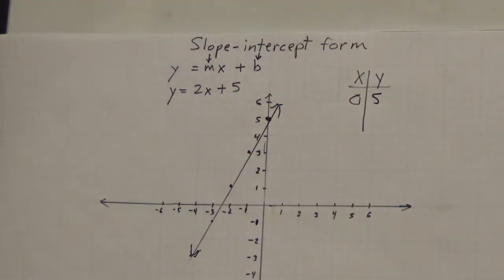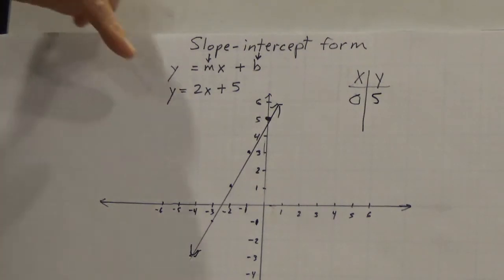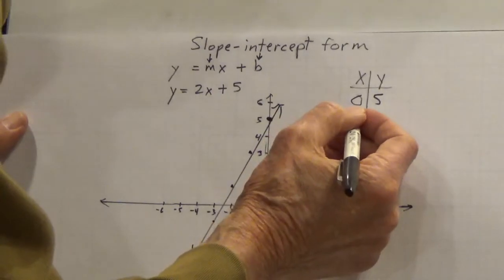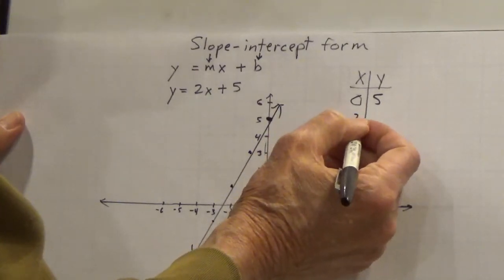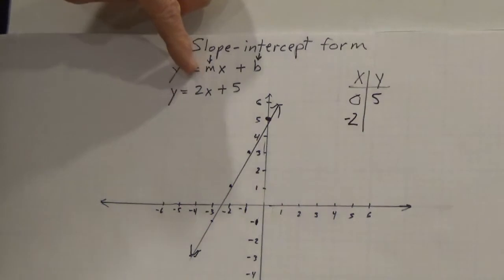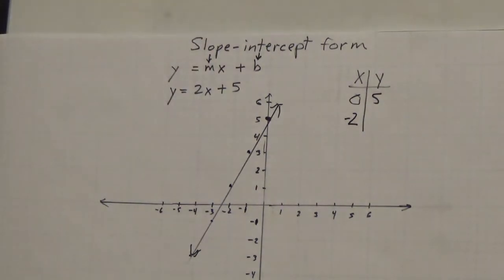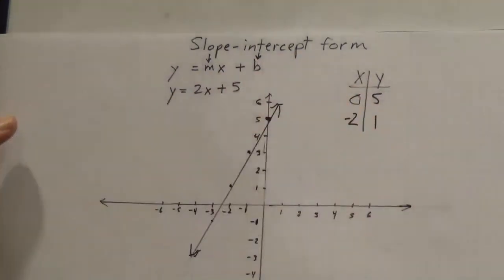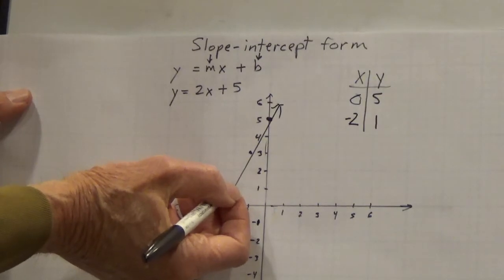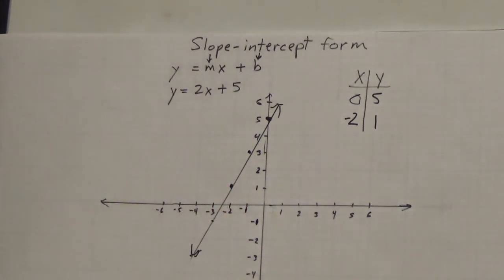Let's give x another value. If we make it 2, that would be 4 plus 5 would be 9 — that's off my graph. Let's make it negative 2. If x is negative 2, 2 times negative 2 would be negative 4. Negative 4 plus 5 would be 1. So you'd also have the point (-2, 1), which is this point here on my graph.